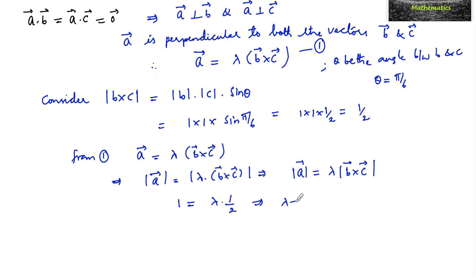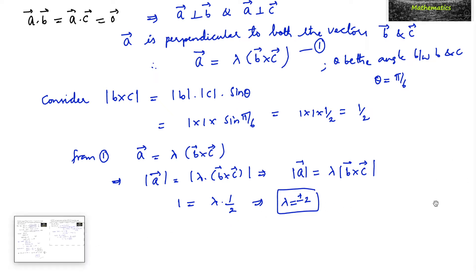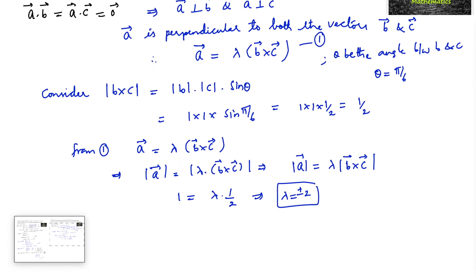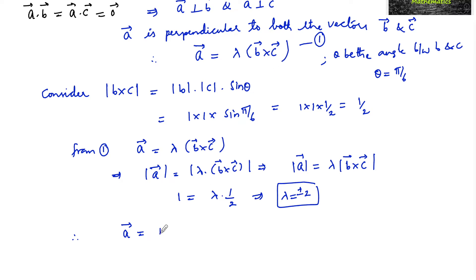So λ = ±2, since modulus is applied. Therefore, vector a = ±2(b×c). This completes the first part.